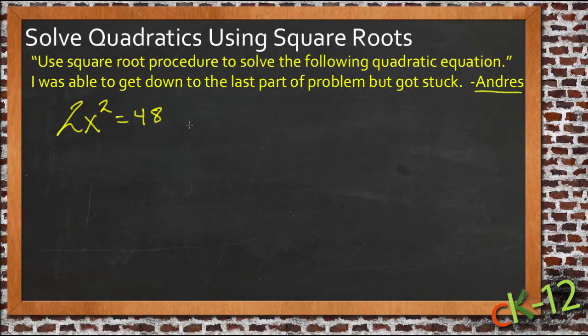Here I have a question that was sent in by a young man named Andres who was having some trouble with this equation right here: 2x squared equals 48. He was supposed to find using the square root procedure what the roots of this one are. He says he's able to get down to the last part of the problem but he got stuck, so let's see if we can figure out what was going on there.